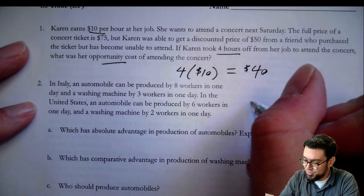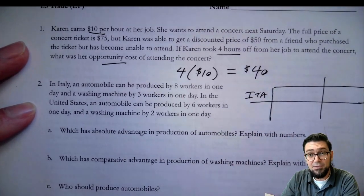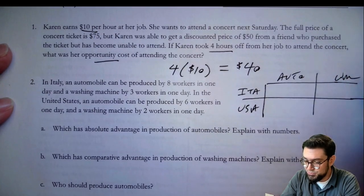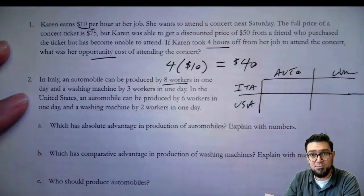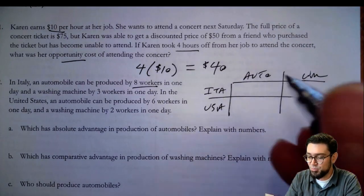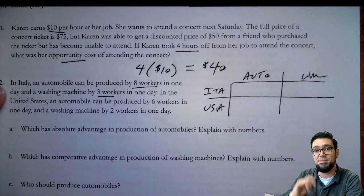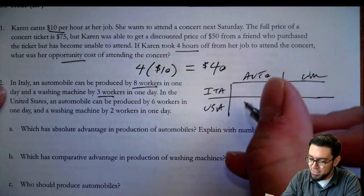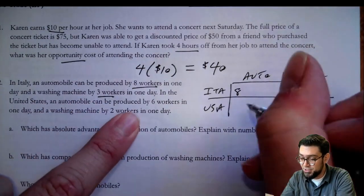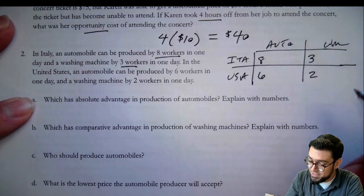Number two: in Italy, automobile production. I'm going to set up the comparative advantage table. We've got Italy and the USA. They can make autos or washing machines. Because they're given input numbers — how many workers it takes to make one automobile — this is an input problem. Italy takes eight workers for an automobile and three for a washing machine. The U.S. takes six and two. So the U.S. has absolute advantage in both, because they can just do it faster.